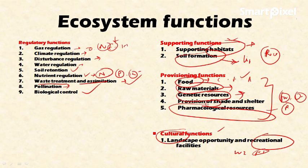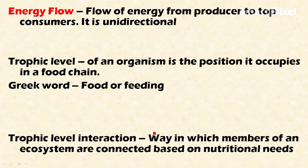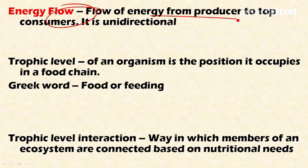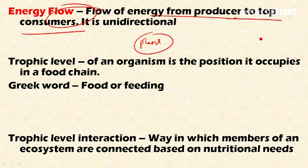The first important function is energy flow. Energy flow is the flow of energy from the producer to the top consumer — that is, from primary producers up through intermediate trophic levels to top consumers such as tigers or lions.